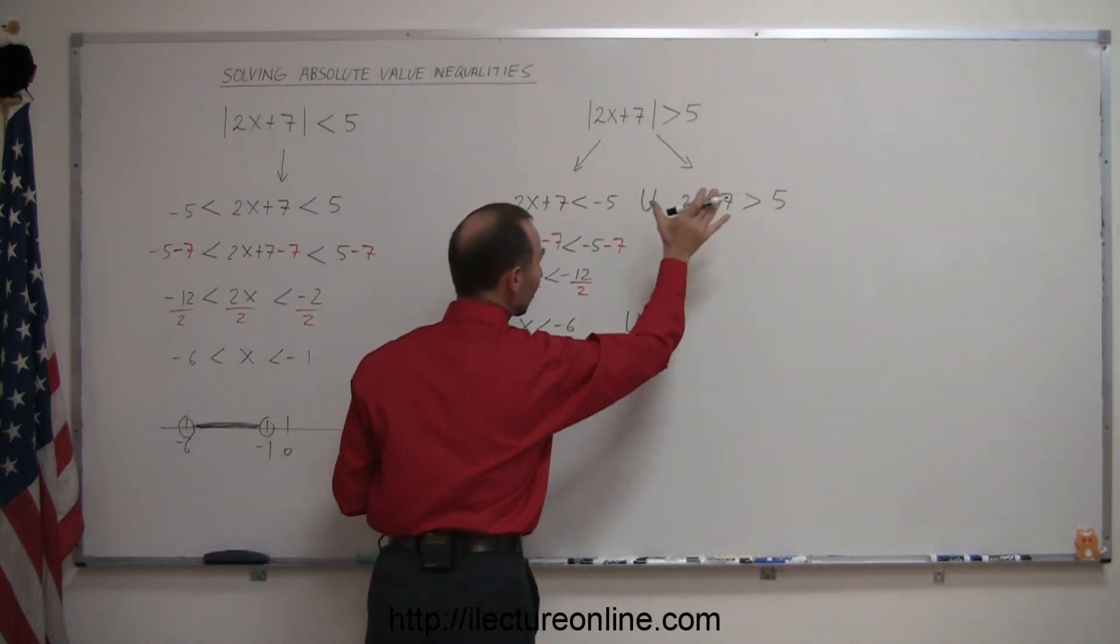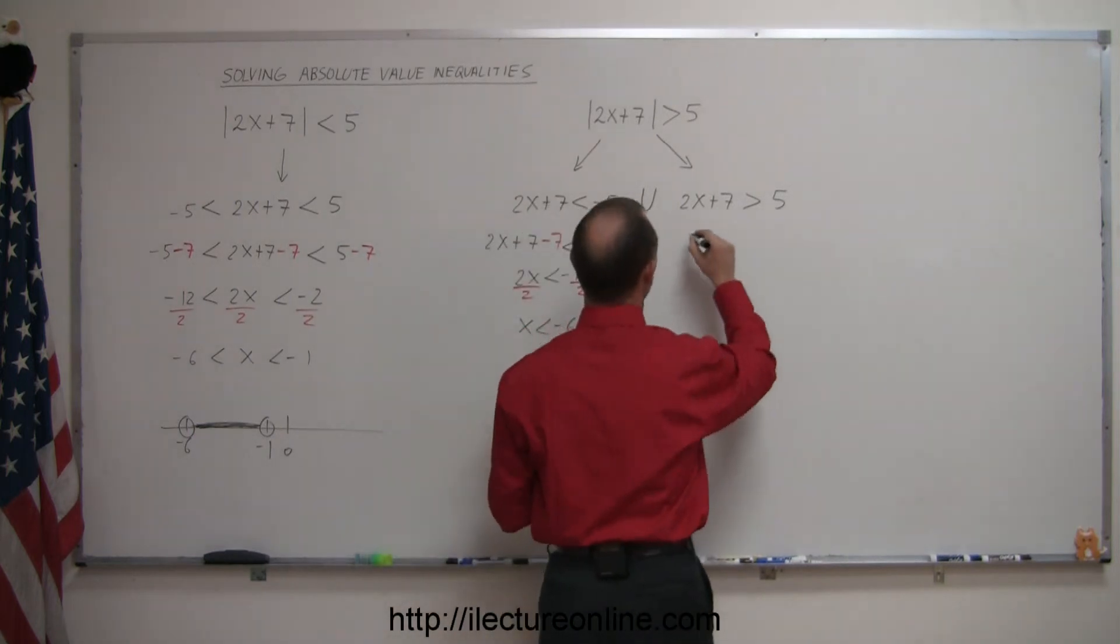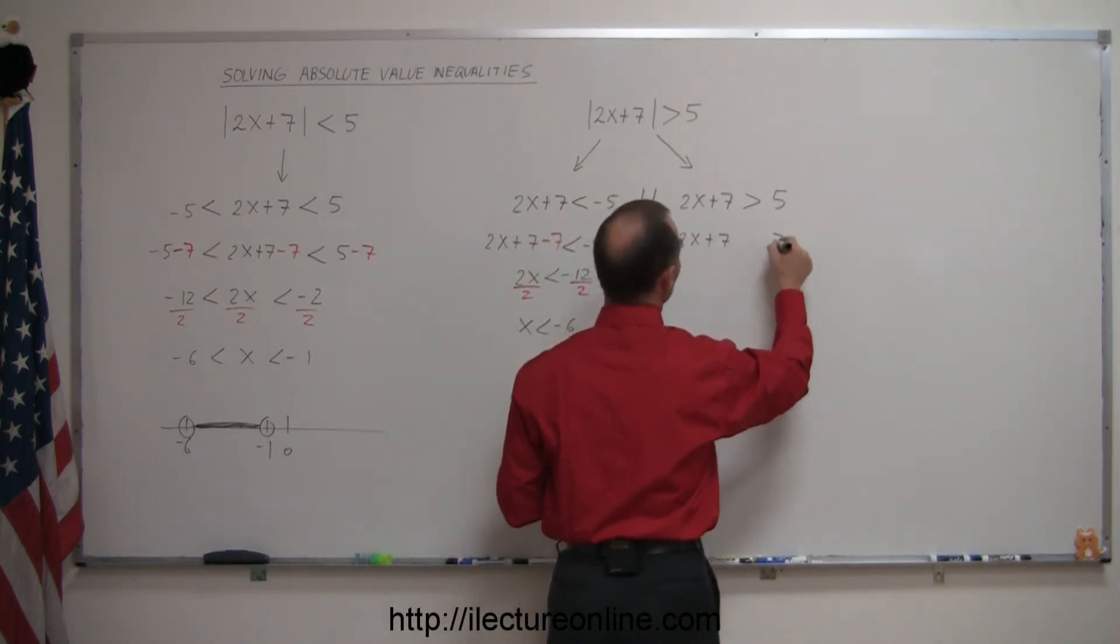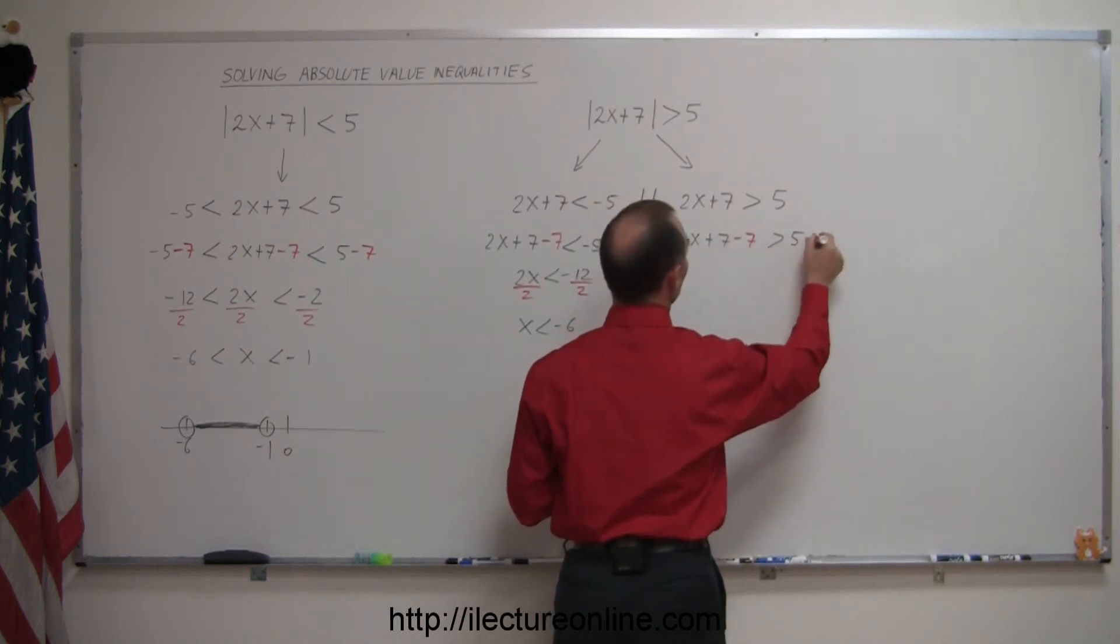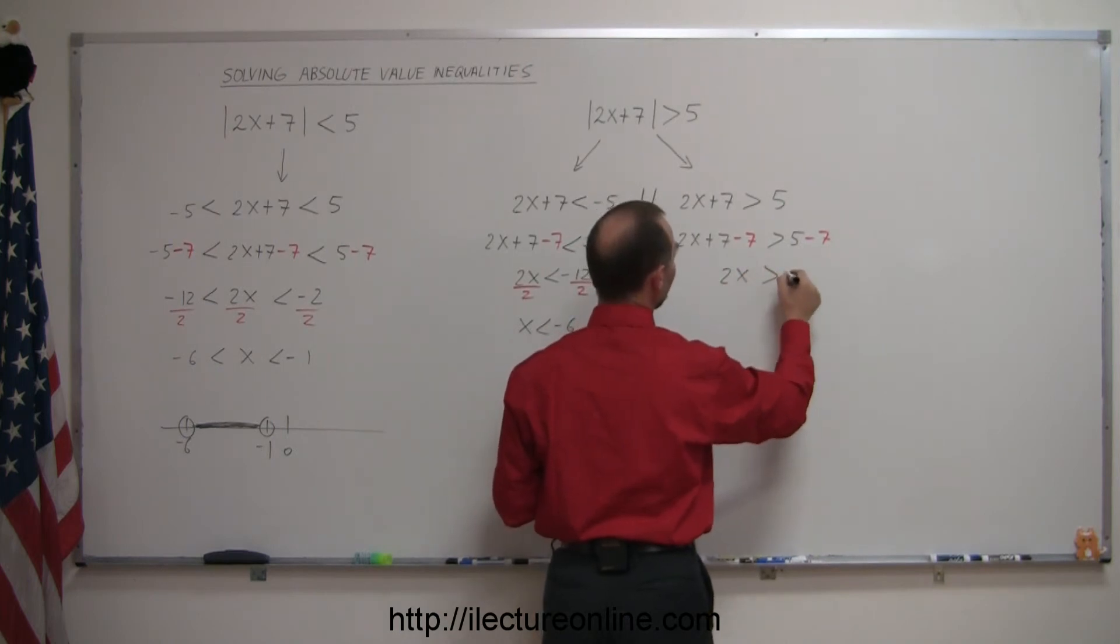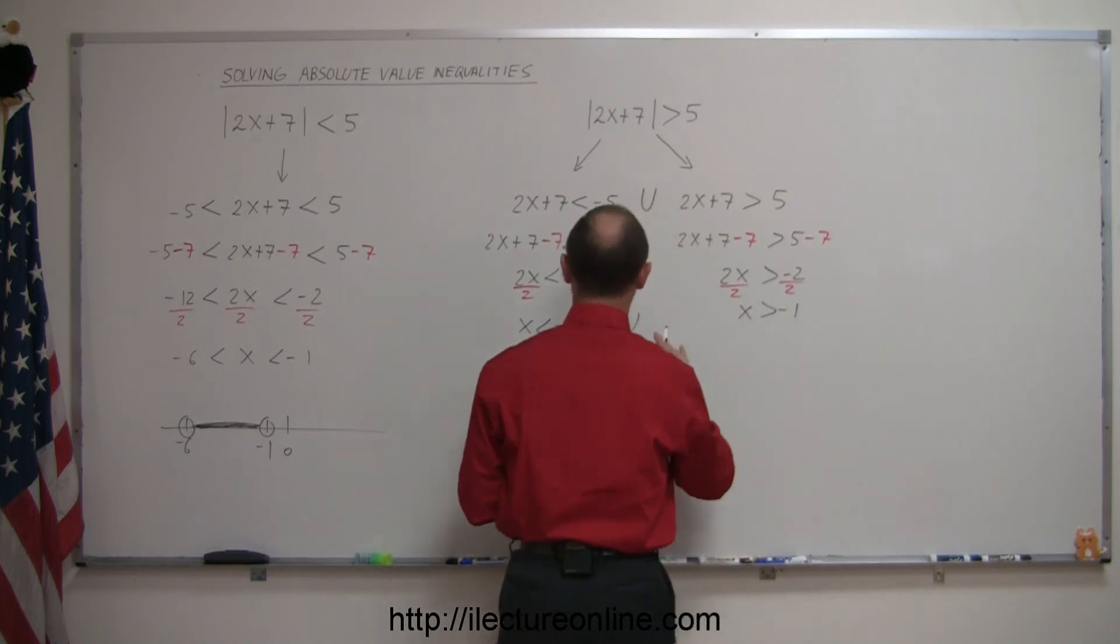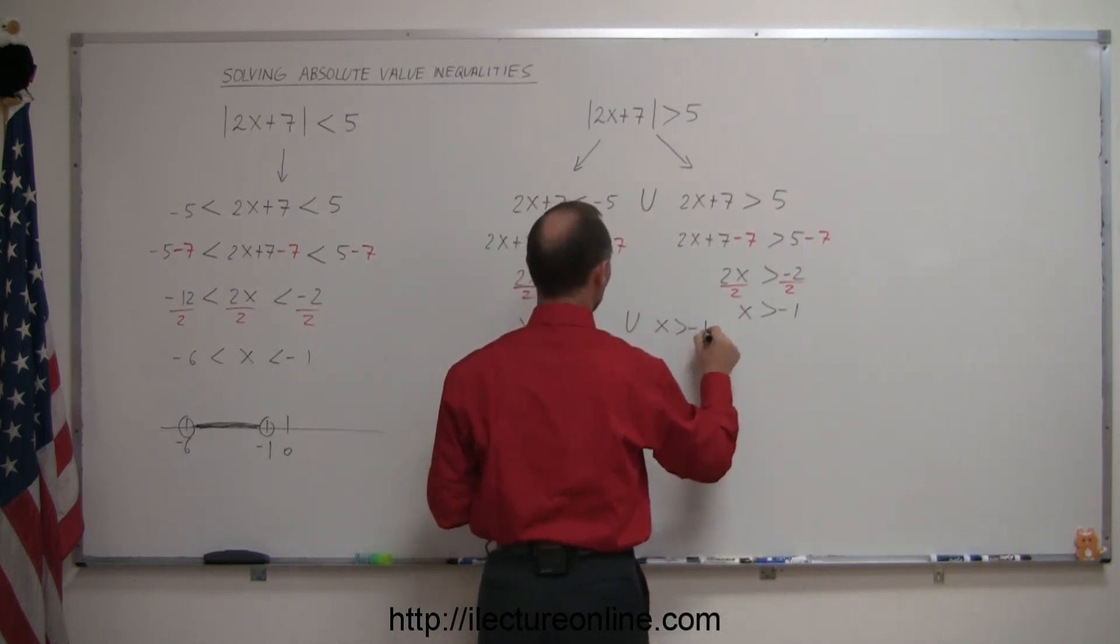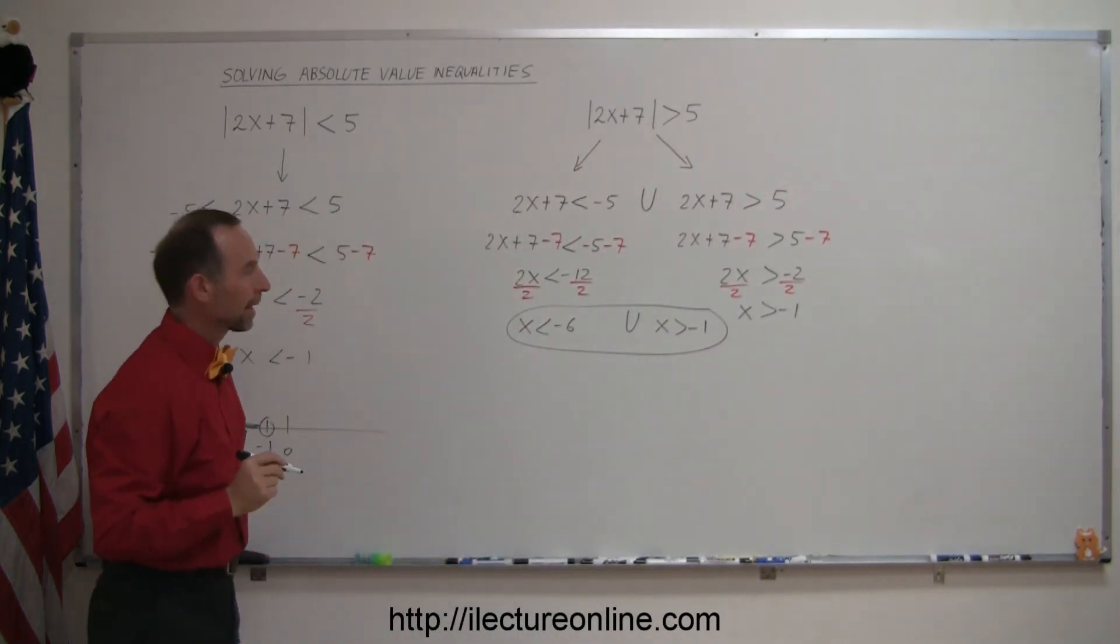And, at the same time, this condition must be met. So, we do the same thing over there. We write 2x plus 7 greater than 5. We want to subtract 7 from both sides, so minus 7 minus 7. So, that becomes 2x is greater than minus 2. And then we divide both sides by 2. And that gives us x must be greater than negative 1. And so, here we write x is greater than negative 1. So, both of those conditions must be met at the same time.